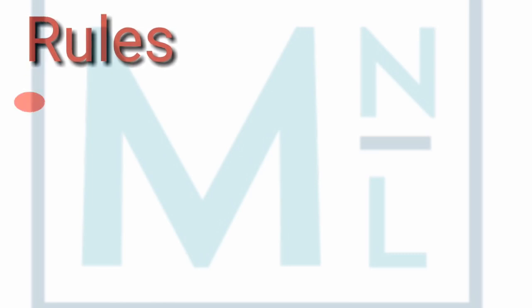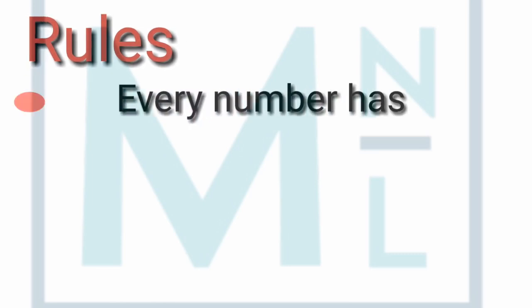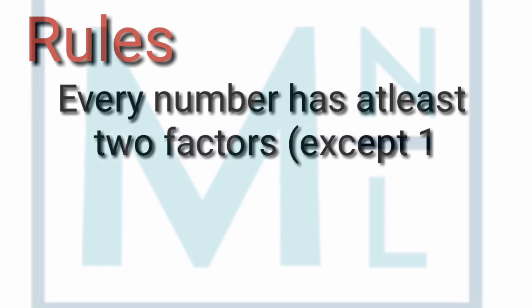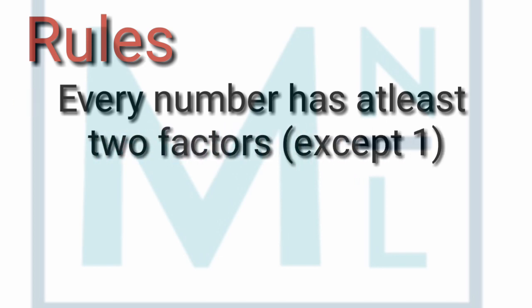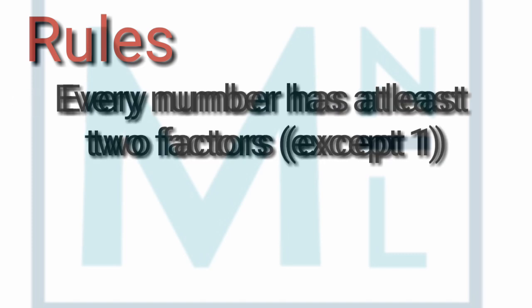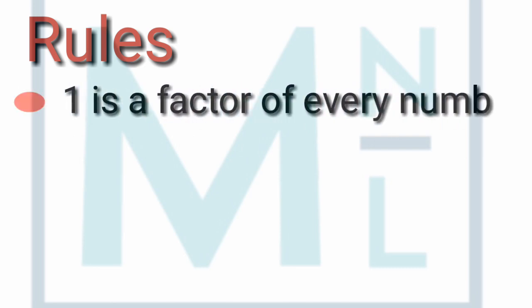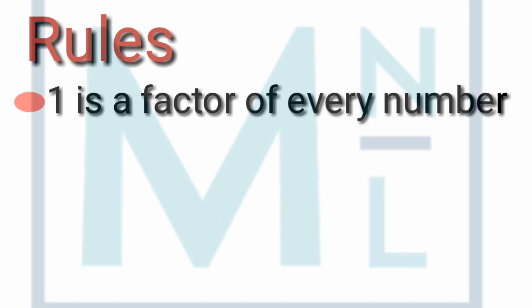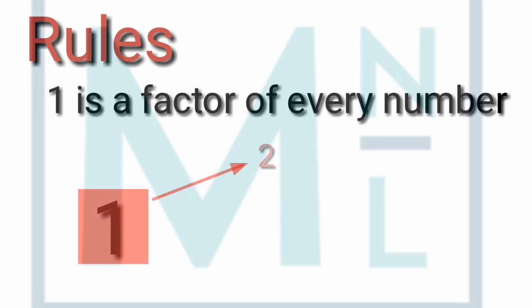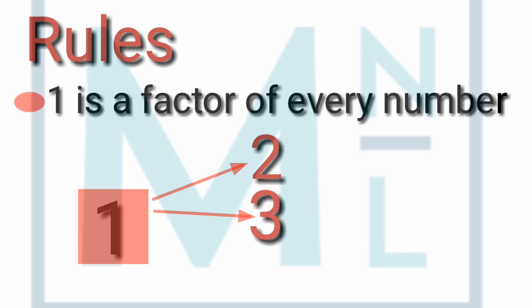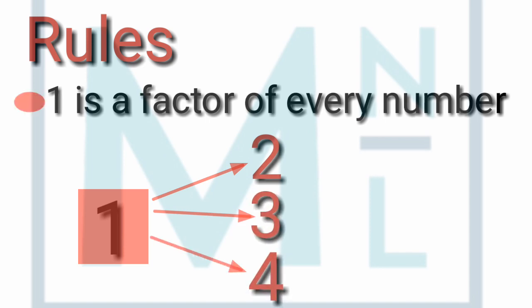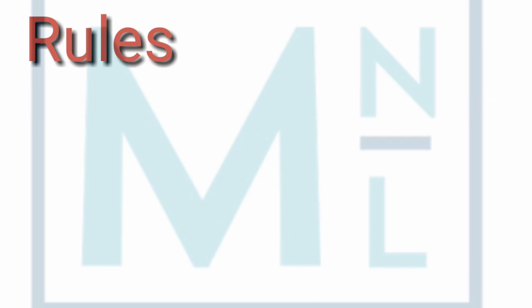There are three rules to understand factors. Rule number one: every number has at least two factors except one — meaning every number except 1 will have at least two factors. Rule number two: 1 is a factor of every number, meaning 1 appears in the table of every number — 2 comes in the table of 1, 3 comes in the table of 1, 4 comes in the table of 1 — all numbers appear in the table of 1.